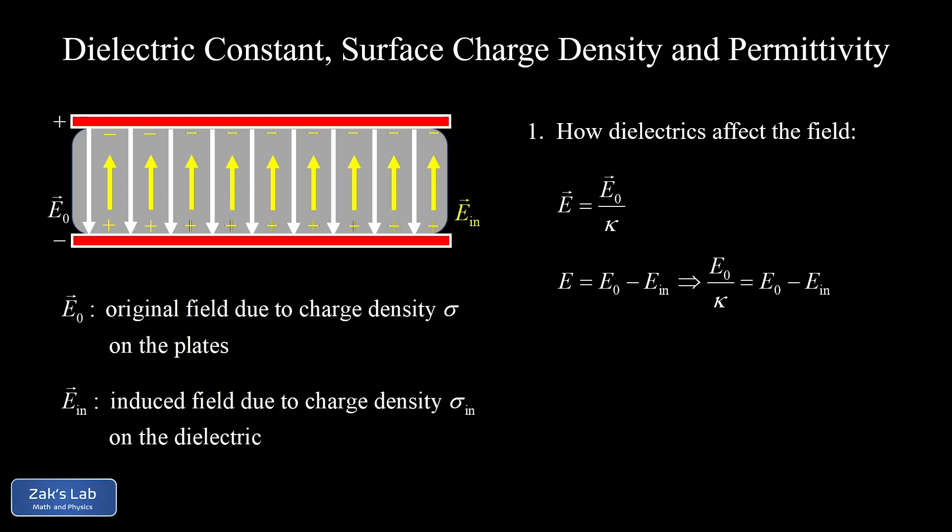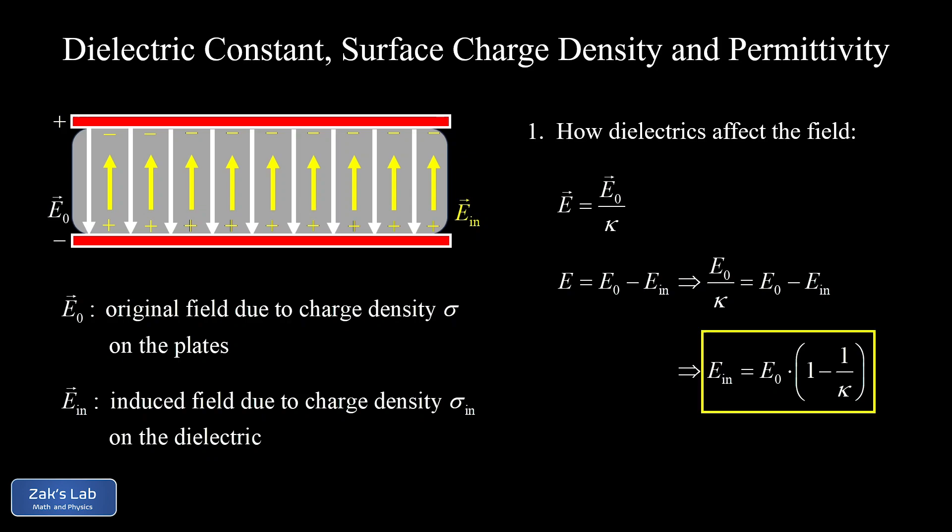This allows us to solve for an explicit expression for the induced electric field. We add E_induced to both sides, subtract E0 over kappa, and factor E0 out of that expression. The induced electric field turns out to be E0 — the original electric field from the charges on the capacitor plates — times the quantity (1 − 1/kappa). That's the first formula in this video important enough to get a box around it.